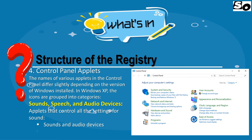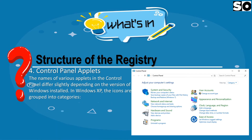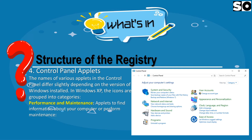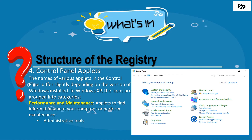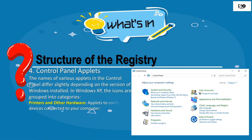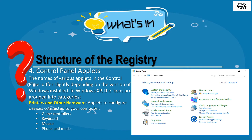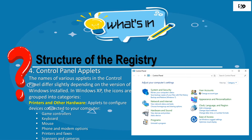Under Sounds and Audio Devices: Speech and Portable Media Devices. Performance and Maintenance contains applets to find information about your computer or perform maintenance, including Administrative Tools, Power Options, and Scheduled Tasks. Printers and Other Hardware contains applets to configure devices connected to your computer, such as Game Controllers, Keyboard, Mouse, Phone and Modem Options, Printers, and Scanners and Cameras.